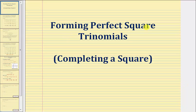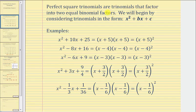Welcome to a lesson on forming perfect squared trinomials. Perfect squared trinomials are trinomials that factor into two equal binomial factors. Let's begin by considering trinomials in the form x squared plus bx plus c. In this form, the coefficient of the degree one term, or linear term, is b, and the constant term is c.